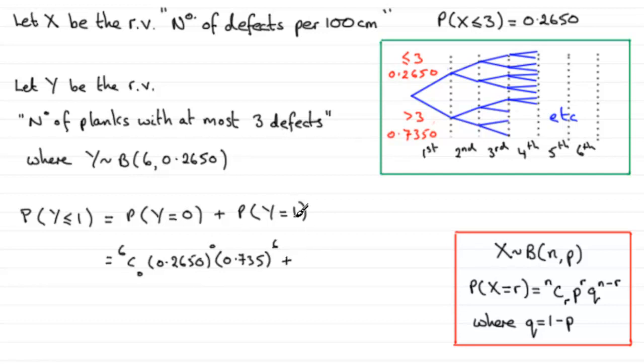We now have to add it to the probability that Y equals 1, so it's going to be 6C1. Probability of success 0.2650, that's to the power r, and r in this case was the 1, so you have that 1.